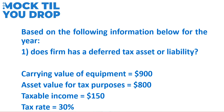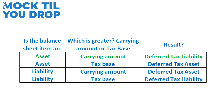We have a carrying value of $900, which is greater than its tax base of $800. Because these two values are different, we know there will be differences between accounting profit and taxable income. Because the carrying value is greater than the tax base, we have a deferred tax liability. A reference table shows that for an asset, when the carrying amount is greater than the tax base, the result is a deferred tax liability — the outcome depends on whether you're dealing with an asset or liability and the relative magnitudes.